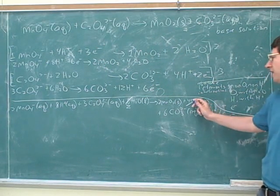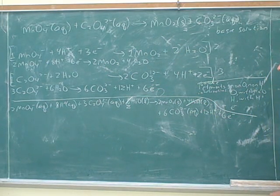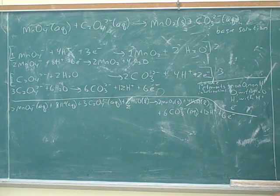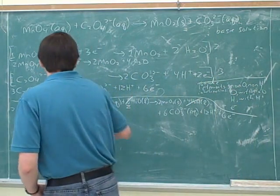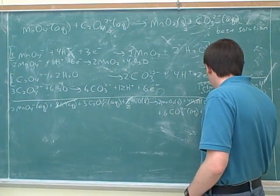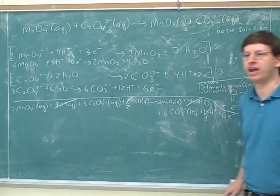Because we cancel that with the 4 waters on the right, any other cancellations we can make? The H pluses also cancel here. So what does that leave us with? Four on the right. Yeah, so this is more cancellations than we had before - the 8H+ here cancel with this and leave us 4H+ on the right.